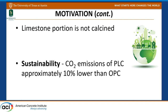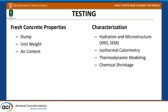The nice thing about including limestone in the system is that the limestone does not have to be calcined, so you save on the calcination process and on energy. A lot of people have done studies on Type IL cements, which are permitted under ASTM C 595 and allow up to 50 percent limestone, resulting in about a 10 percent reduction in CO2 emissions.